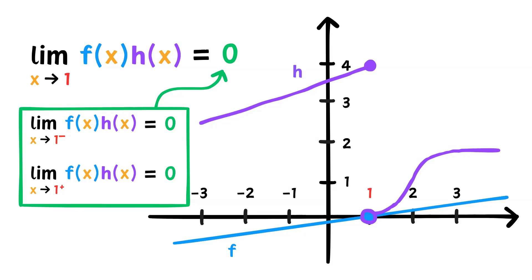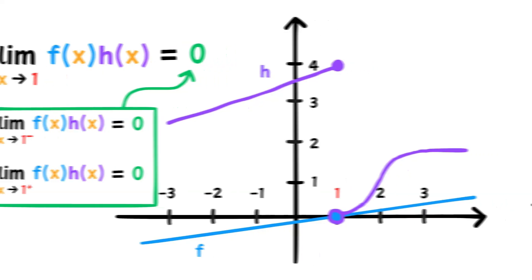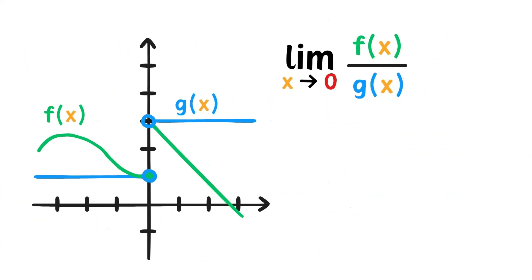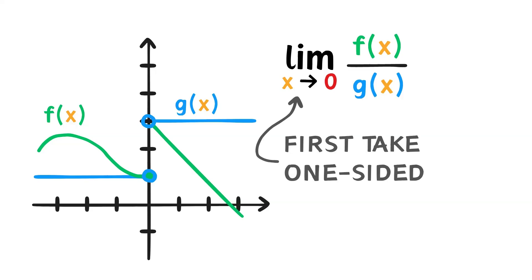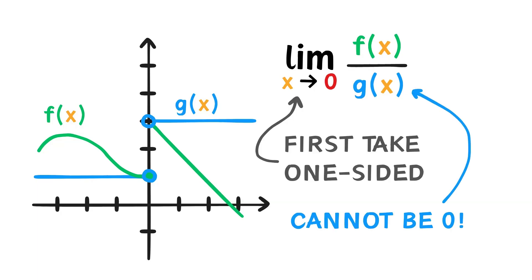So that's the limit of the product of functions. The limit of the quotient of functions is very similar. Just like the product of functions, we first need to take the one-sided limits of the individual functions and then piece it together. If the limits exist, so does the limit of the quotient — well, most of the time. There is one caveat: what value can the limit of the denominator not be? Zero. If the bottom is 0, then sometimes we'll get an undefined limit, so we'll have to keep an eye out for that.